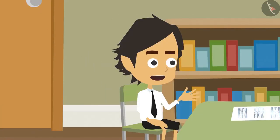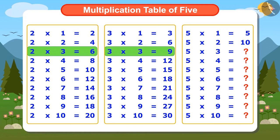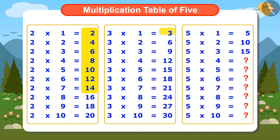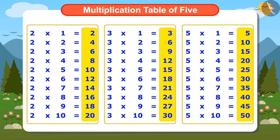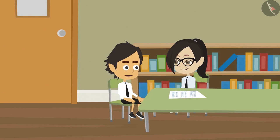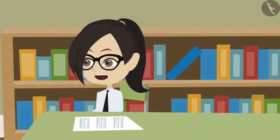Oh wow! Then we can find the 3rd number in the Multiplication Table of 5 by adding the 3rd numbers — 6 and 9 — from the Multiplication Tables of 2 and 3, which gives 15. In this way, we can find the complete Multiplication Table of 5 by adding the numbers from the Tables of 2 and 3. Now I have understood — to find the Multiplication Table of large numbers, we can use the Multiplication Tables of smaller numbers.